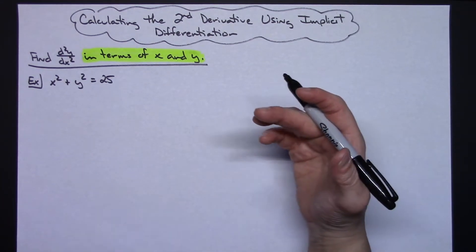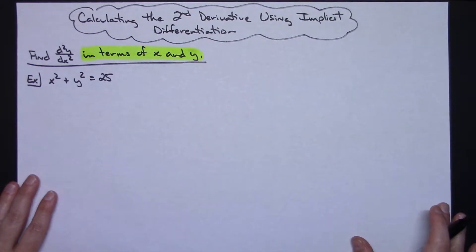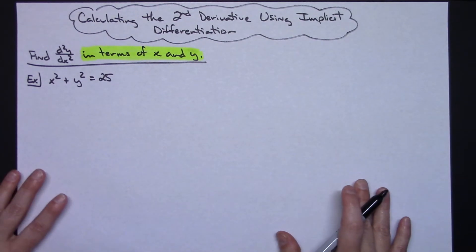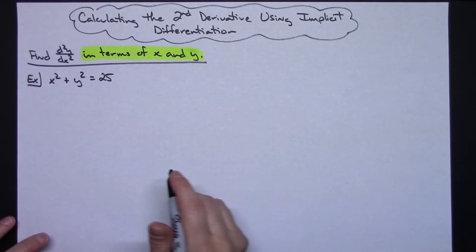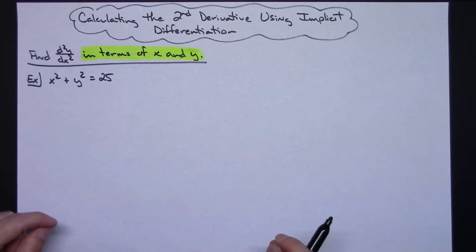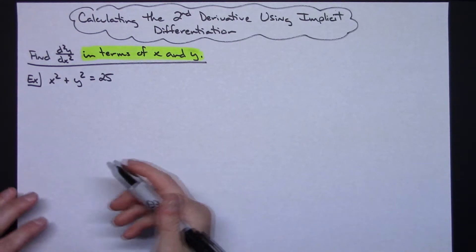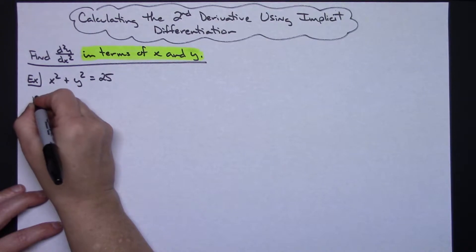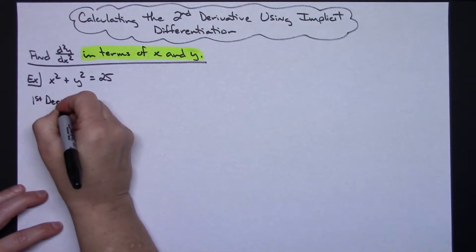I'm going to try to be very organized and very detailed here so that you can see exactly where all of these substitutions come from, and I really am going to try to keep it all on one piece of paper because I think it's going to be a better visual. If I'm going to find a second derivative, I need to find the first derivative first, so I'm going to calculate my first derivative right here.